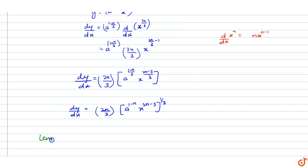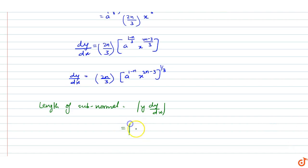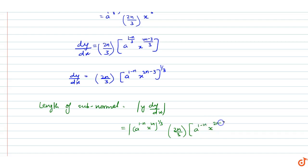The length of subnormal is |y · dy/dx|. This equals the modulus of a^(1−n) · x^(2n) to the power 1/3, multiplied by (2n/3) · [a^(1−n) · x^(2n−3)]^(1/3).